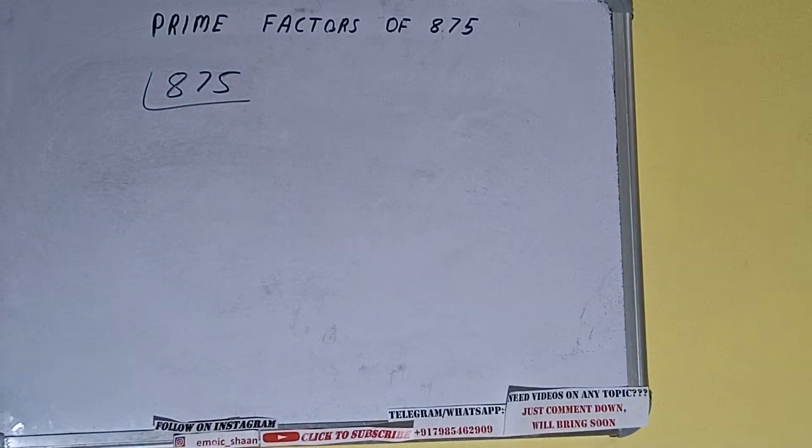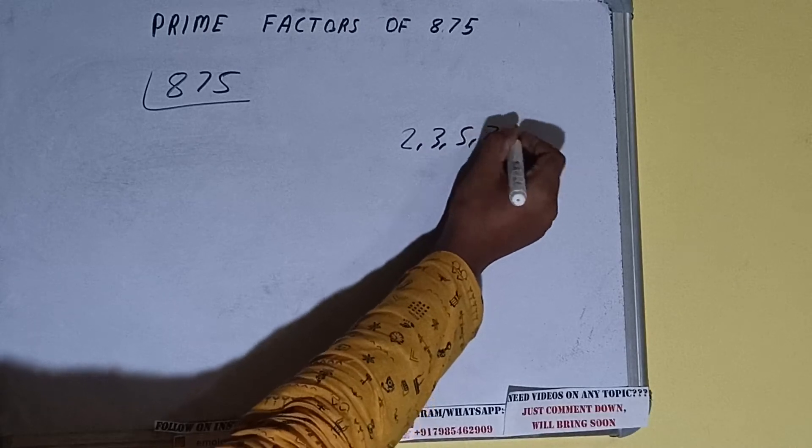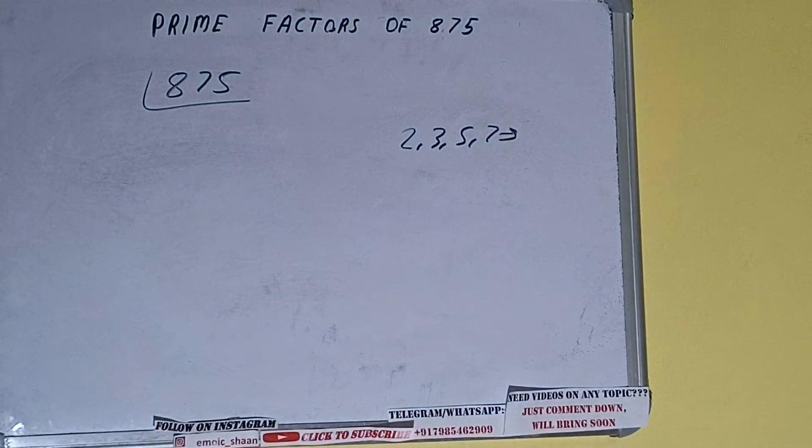Prime numbers are numbers that are divisible by 1 and the number itself, like 2, 3, 5, 7, and so on. We'll check with the lowest prime number we have, that is 2, 3, 5, 7.